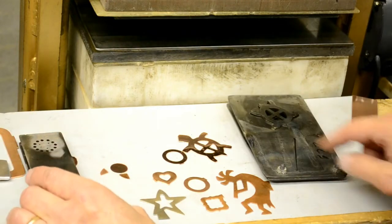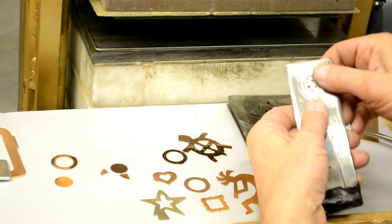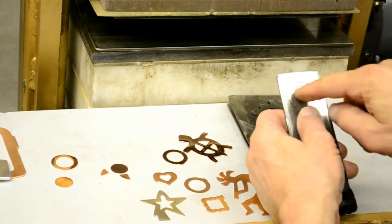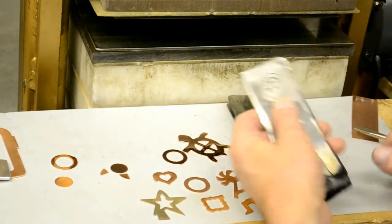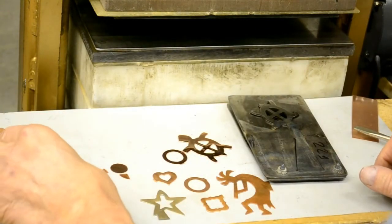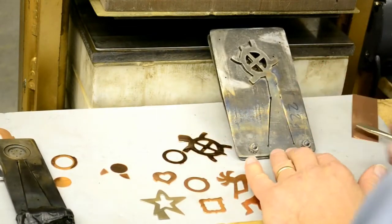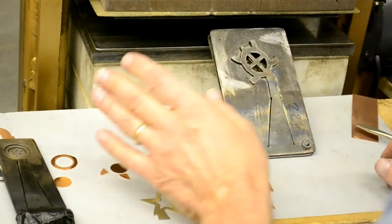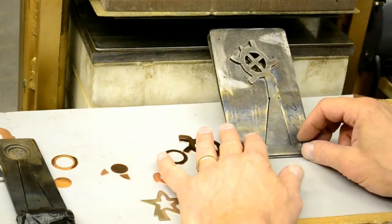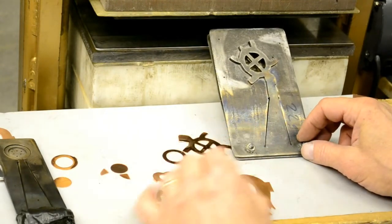So keep these screws tight. If your die is one with these countersunk screws, always keep those tight. And that will keep your die aligned, which is absolutely essential. As soon as you have misalignment problems, the part will start to leave burrs.